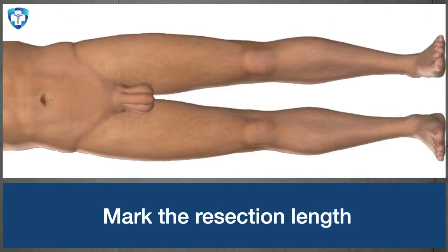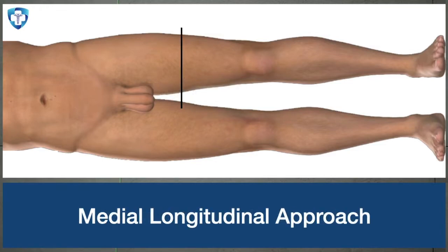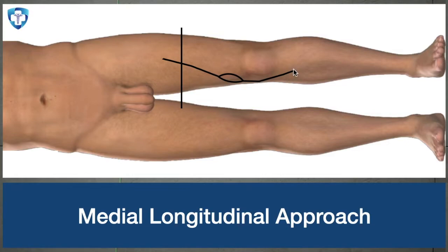From the pre-operative radiographs and MRI, we will measure and mark the resection length from the joint line, then mark the skin incision. We are using the medial longitudinal approach. We start the skin incision 5 cm proximal to the resection mark, go along the sartorius muscle, incorporate the biopsy scar, stay on the medial side of the knee, and go till the tibial tuberosity.